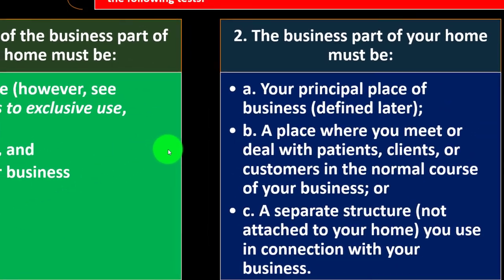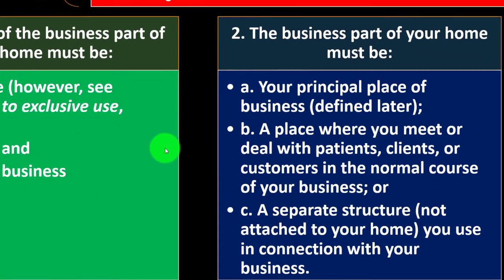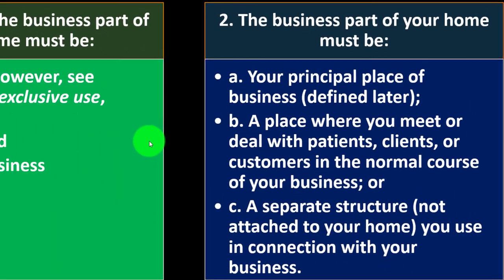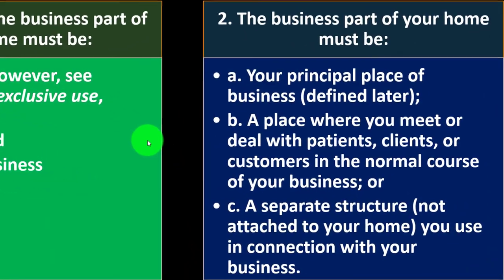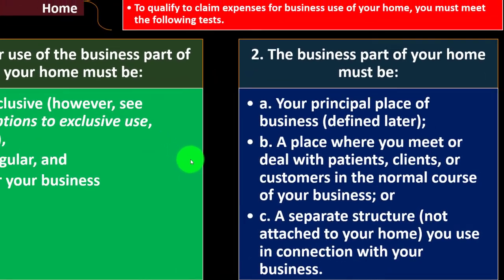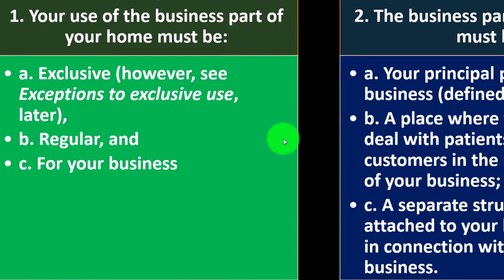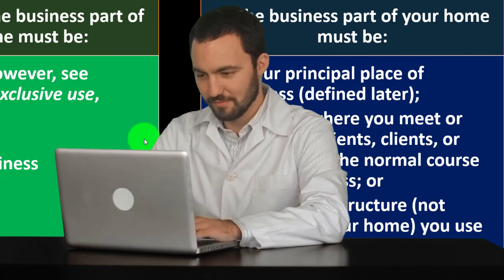Number two, the business part of your home must be A) your principal place of business, defined later. You might have business in different areas, and maybe you only use part of your house for things that aren't your principal business. For businesses where you work online from one location, that spot would likely qualify. For other businesses where you move around and work at clients' sites, you might spend most of your time away — but you may still do your executive or administrative work from one central place, which could define your place of business.